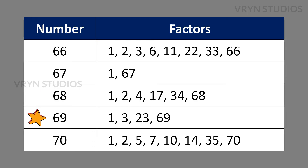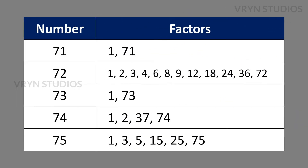The factors for the number 69 is 1, 3, 23 and 69. The factors for the number 70 is 1, 2, 5, 7, 10, 14, 35 and 70. The factors for the number 71 is 1 and 71. The factors for the number 72 is 1, 2, 3, 4, 6, 8, 9, 12, 18, 24, 36 and 72.